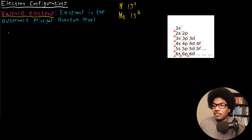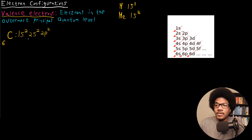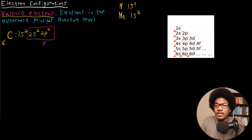For example, if we take carbon, we know that carbon has six total electrons. Using everything we've learned, we place two electrons in the 1s, two electrons in the 2s, and then the last two electrons in the 2p. If we were to highlight the valence electrons, the valence electrons for carbon are these four that are in the outermost principal quantum level. Denoting the valence electrons is going to be very important.